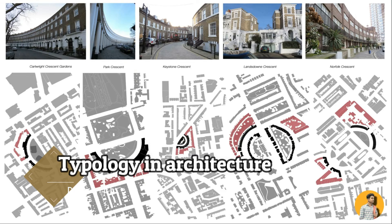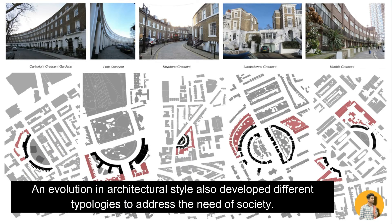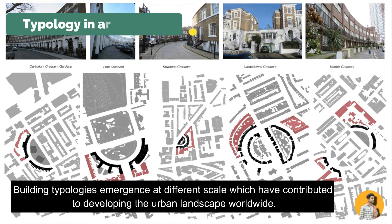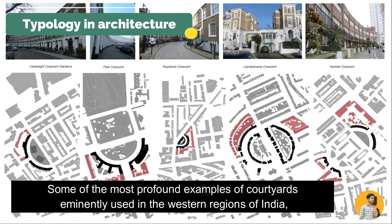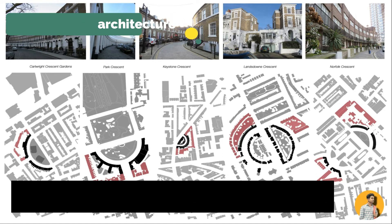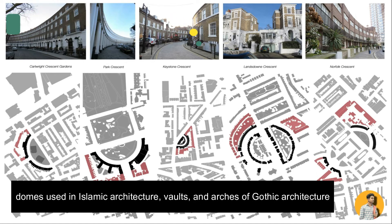The most important part is typology in architecture. An evolution in architectural style also developed different typologies to address the needs of society. Building typologies emerged at different scales, contributing to the development of the urban landscape worldwide. Many architectural elements also became prominent traits associated with typologies of architectural style — some of the most profound examples being courtyards prominently used in the western region of India, domes used in Islamic architecture, and vaults and arches of Gothic architecture.